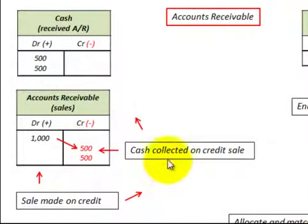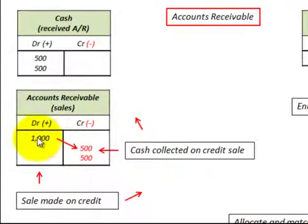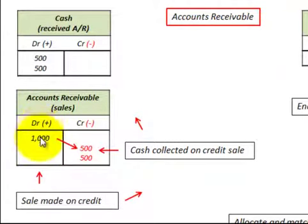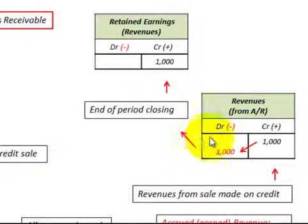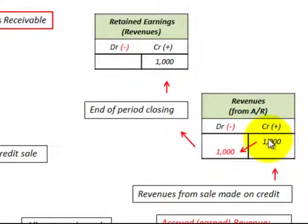Let's look at a typical accounts receivable transaction. Say we sold some goods on credit for $1,000. We would debit or increase the accounts receivable account by $1,000, and then the corresponding journal entry would be to credit our revenues account, increasing revenues by $1,000.